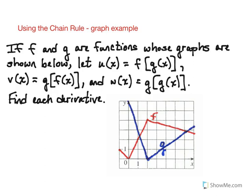Let's take a look at how we can use the chain rule to find requested derivatives when information is given to us in the form of a graph. So here we have two graphs of functions. The red graph is function f, the blue graph is function g.